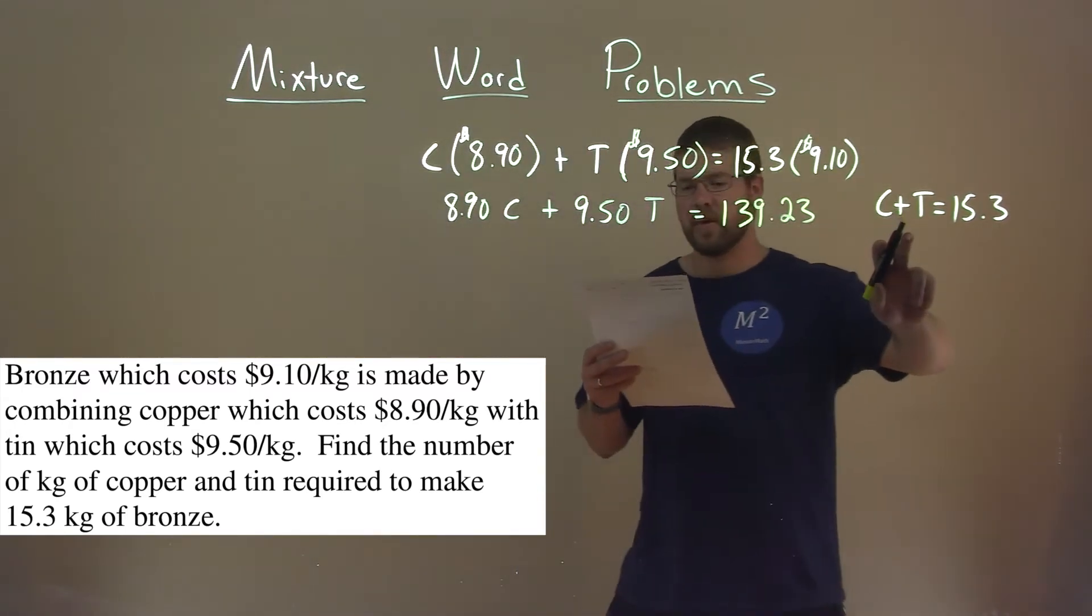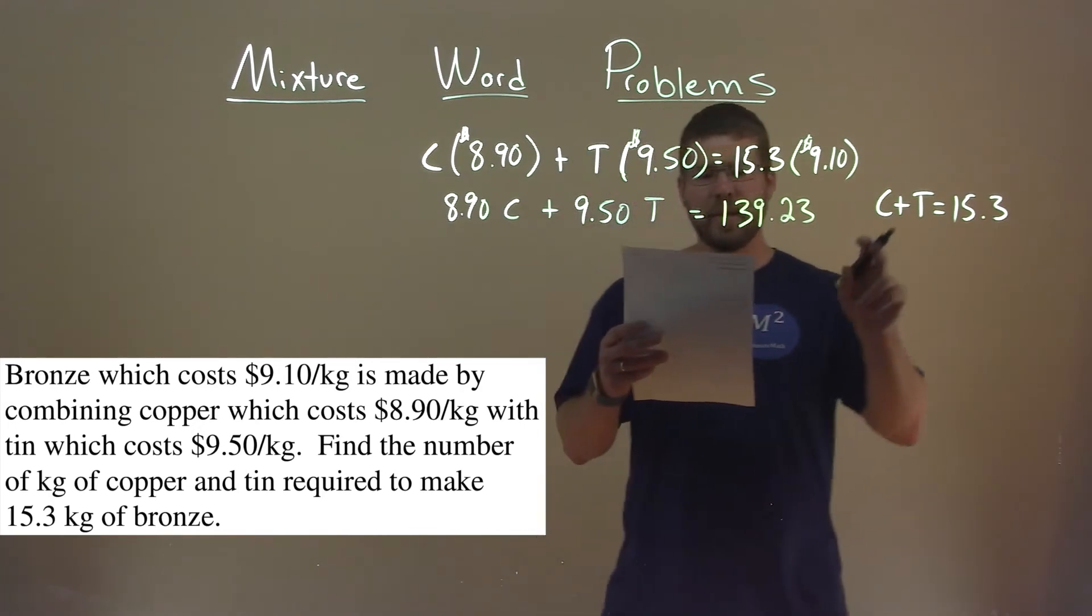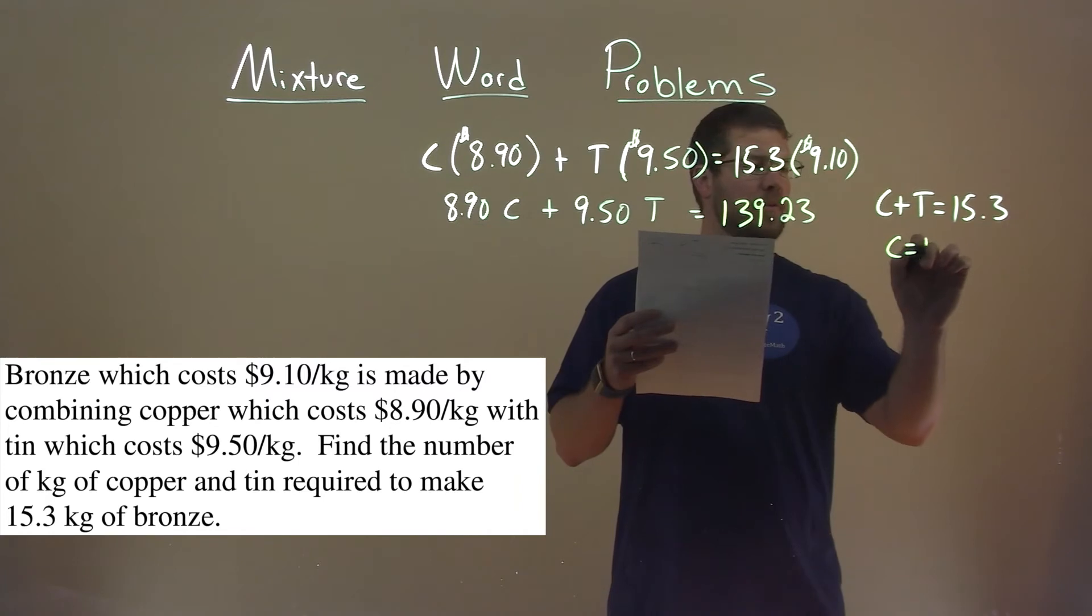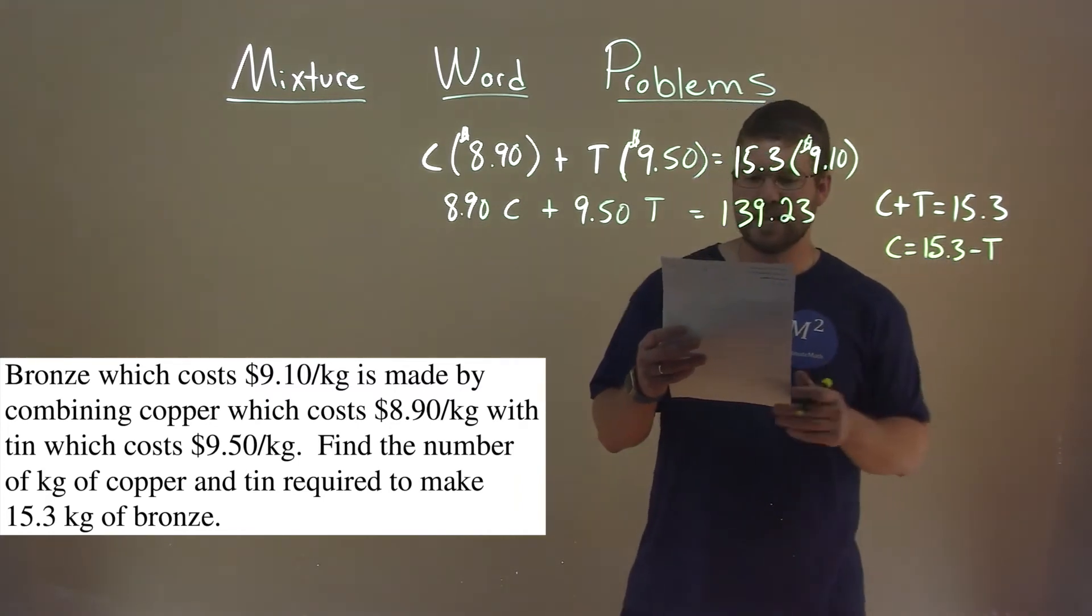I'm now going to take the second equation. I'm going to use substitution here. I'm going to get C by itself. So subtracting T from both sides, C equals 15.3 minus T.